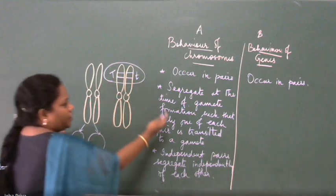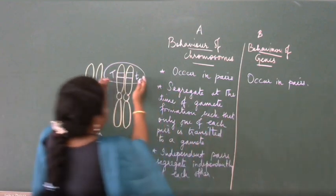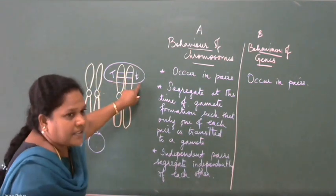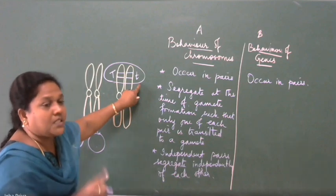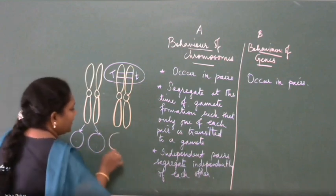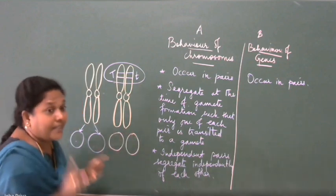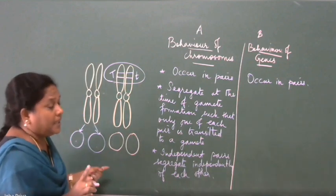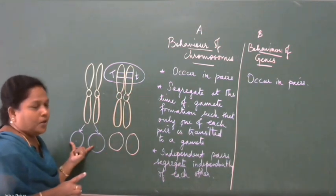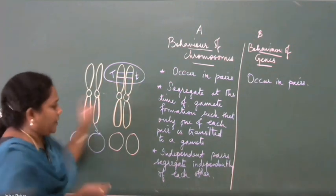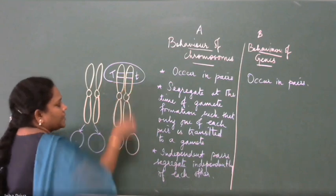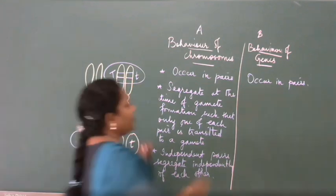Here you are learning about the chromosome; on this side you are learning only about the genes. Our concentration is on capital T and small t — that is what we are learning. A gene is represented by two alleles. The same way, when the gamete is formed, they segregate at gamete formation, and only one of each pair is transmitted to a gamete — so to this gamete capital T comes, and to this gamete small t comes.